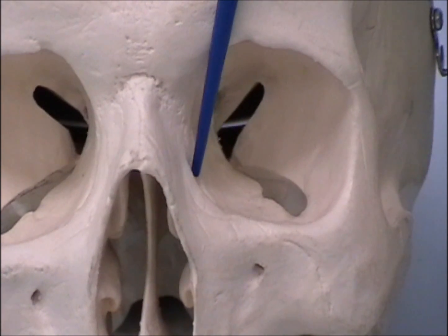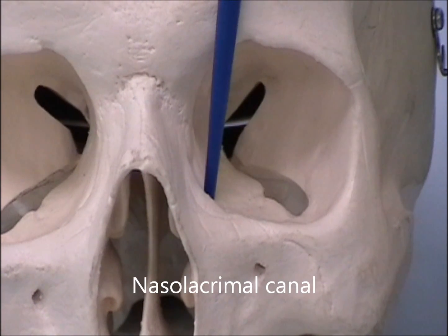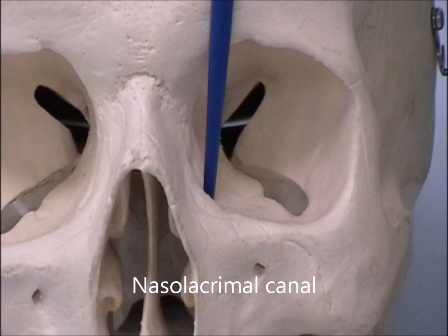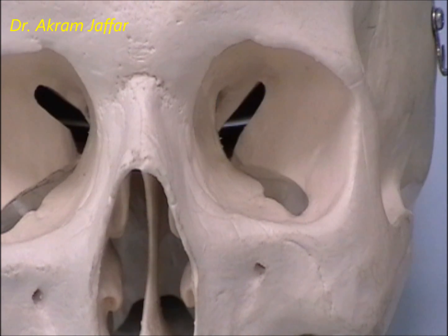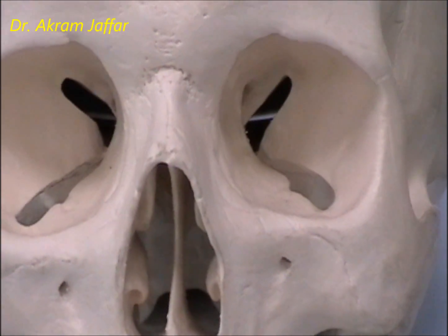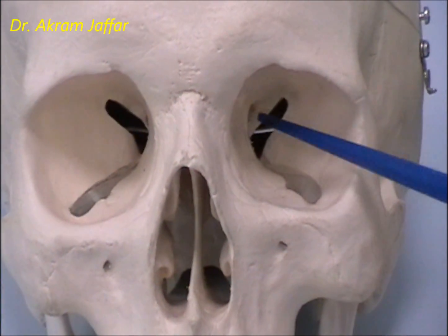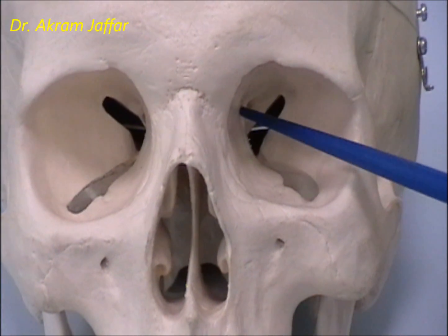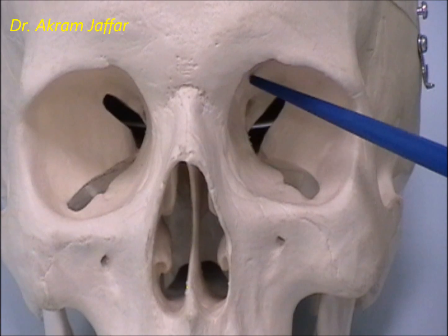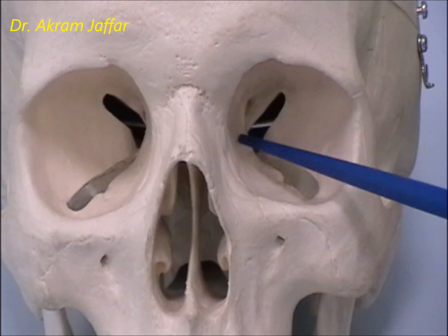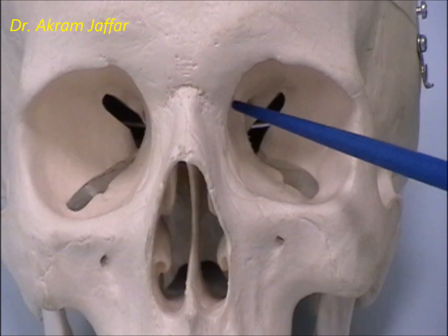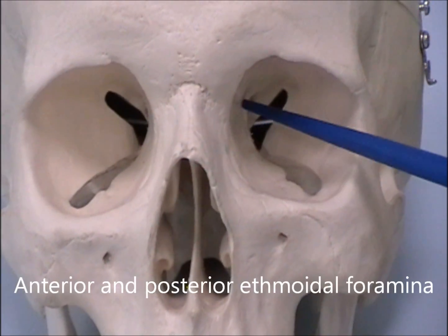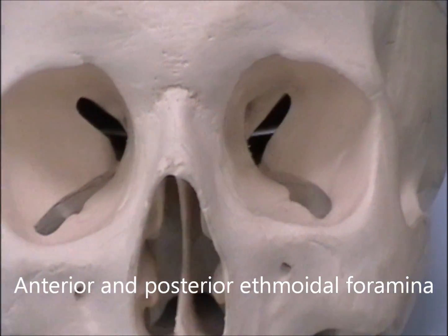The lacrimal fossa leads downwards into the nasolacrimal canal, which transmits the nasolacrimal duct that communicates with the nose. On the medial side of the orbit, in between the orbital plate of the frontal bone and the ethmoid bone, you might see two small foramina — the anterior and posterior ethmoidal foramina.